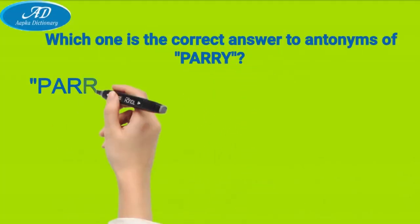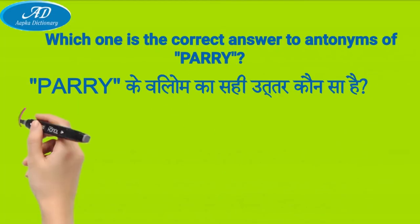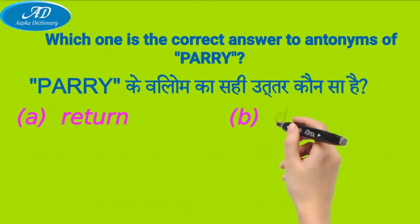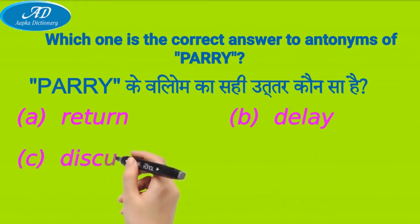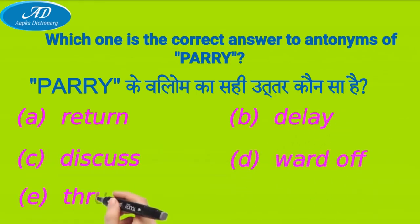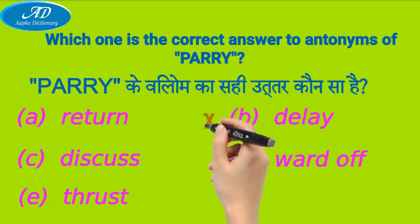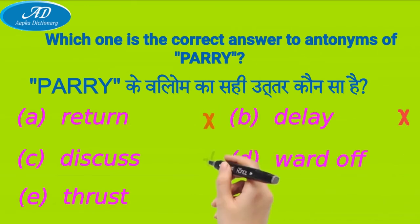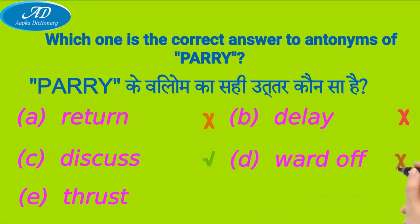Which one is the correct answer to antonyms of Pari? Pari ki vilomakar sahiu tera kaunah sahai: A) return, B) delay, C) disgust, D) ward off, E) thrust. Answer: A — incorrect, B — incorrect, C — incorrect, D — correct, E — incorrect.